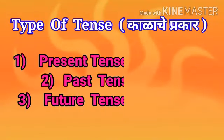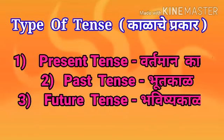Today we are going to learn types of tense, meaning Kalache Prakar. Present Tense means Vartamankal, Past Tense means Bhutkal, and Future Tense means Bhavisyakal. Tense has three types: Vartamankal, Bhutkal, and Bhavisyakal.